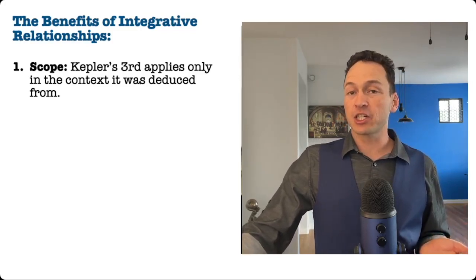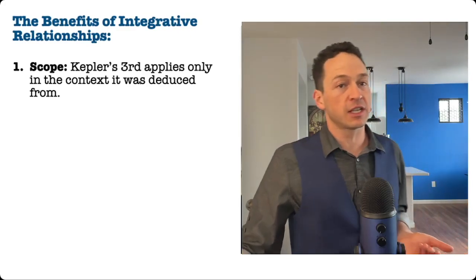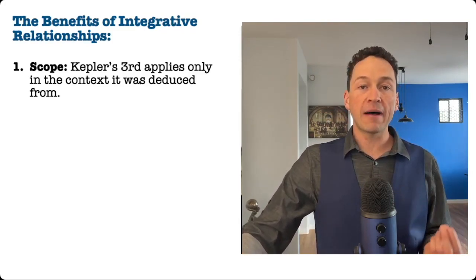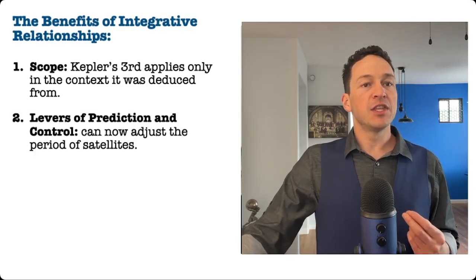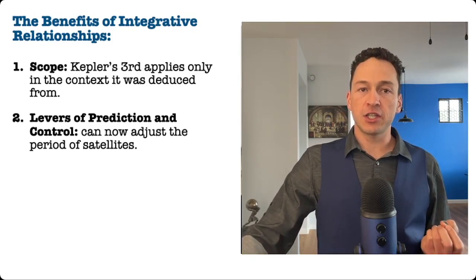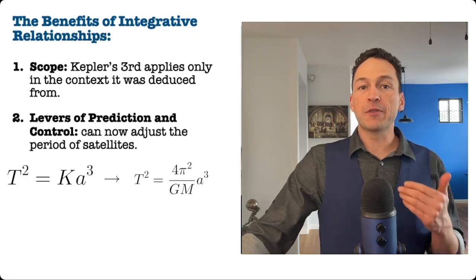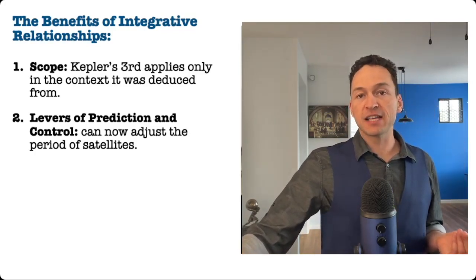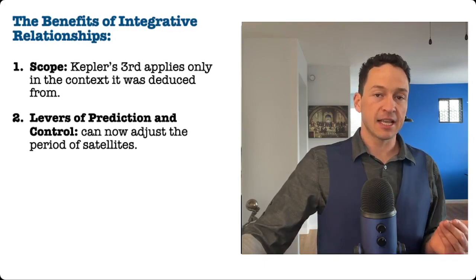This exception to Kepler's third is actually how Neptune was discovered. Third, in general, the deductive integration identifies the scope of a given generalization by showing that it will only apply in situations where the broader generalization applies. This teaches us more about the generalization by giving us information on when the generalization applies and when it does not. The next benefit is levers of prediction and control. The deductive integration changes the equation, which allows us to have more predictive power about the period that different satellites around different central bodies might have.